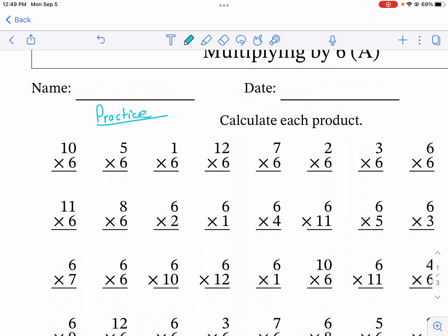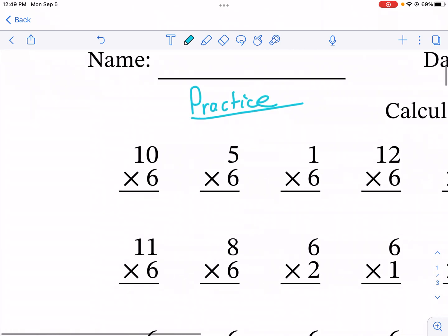So with sixes, not a lot in terms of tricks. Like I said, the fives have some tricks, the tens, but the sixes are just a lot of memorization. You're gonna have to memorize some of these. A couple different things to remember: if you're multiplying the sixes, you're gonna have even numbers always.